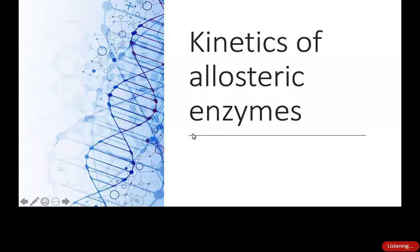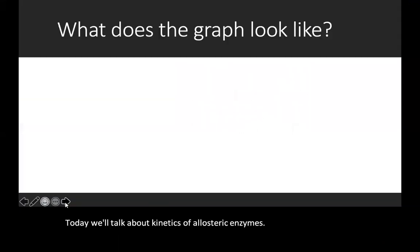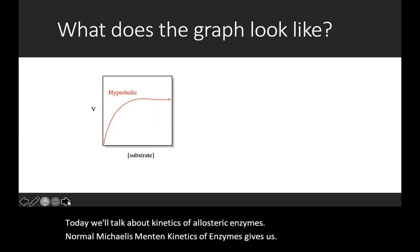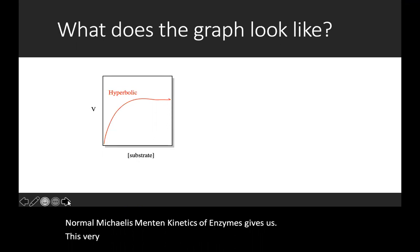Today we'll talk about kinetics of allosteric enzymes. Normal Michaelis-Menten kinetics of enzymes gives us this very familiar hyperbolic curve when we plot velocity versus substrate concentration.